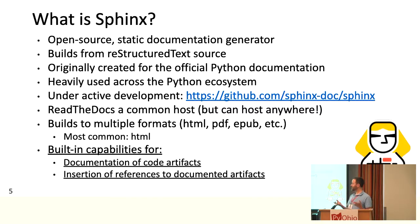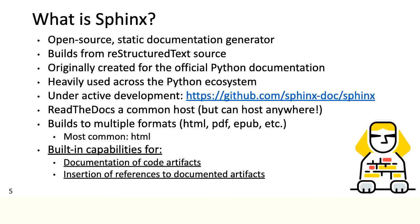For anyone who's not familiar: what is Sphinx? Sphinx is open source. It generates static documentation from reStructuredText source. The reStructuredText markup language is a revised version of a language called Structured Text, specifically created for the Sphinx documentation generator. Sphinx was originally built for the official Python docs but is now used heavily across the entire Python ecosystem. It's under active development — currently in version 2 with a branch for version 3. Many projects host on Read the Docs, but it's static HTML and JavaScript, so you can host it anywhere. You can build to HTML, PDF, or EPUB, though HTML is by far the most common.